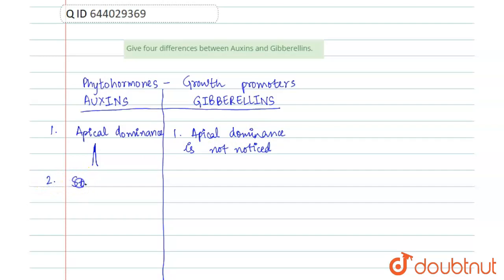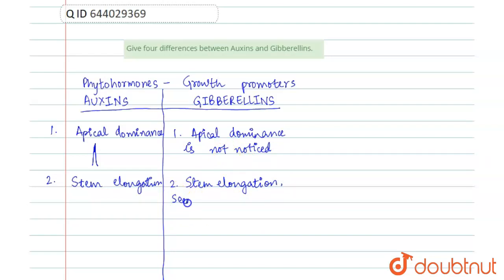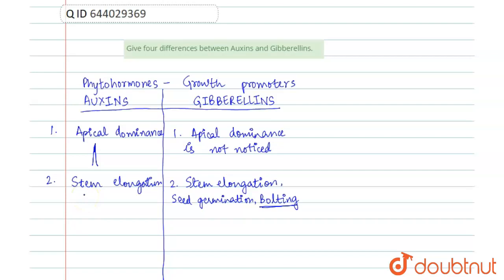Auxins cause stem elongation — this is one effect. Gibberellins also cause stem elongation, but they are not concentrated at the apical position. Besides stem elongation, gibberellins also promote seed germination, and the phenomenon where they suddenly increase the height of a dwarf plant is called bolting. Bolting is included under gibberellins, not auxins, because it is a special name given to the stem elongation effect of gibberellins. Bolting increases the height of dwarf varieties, which is very important.